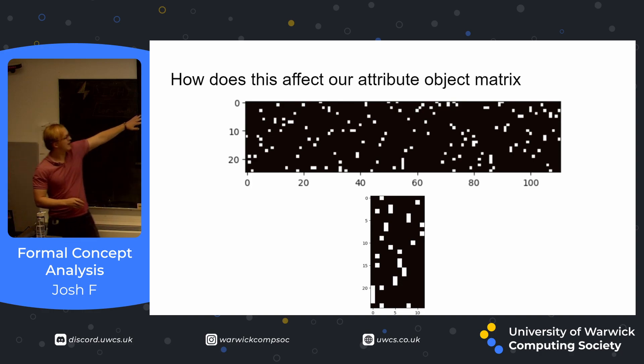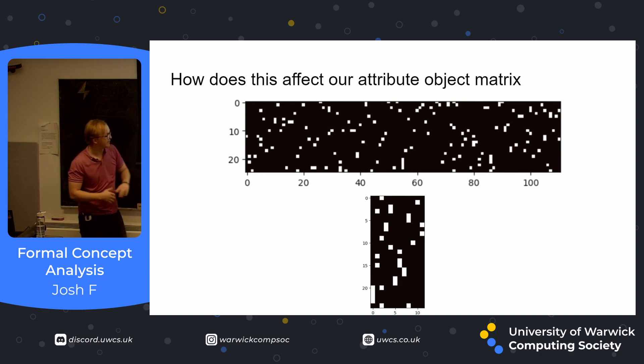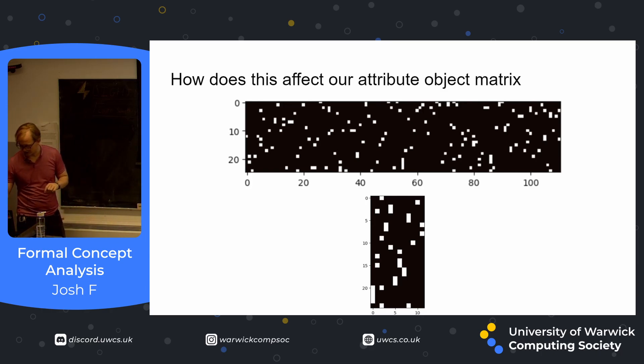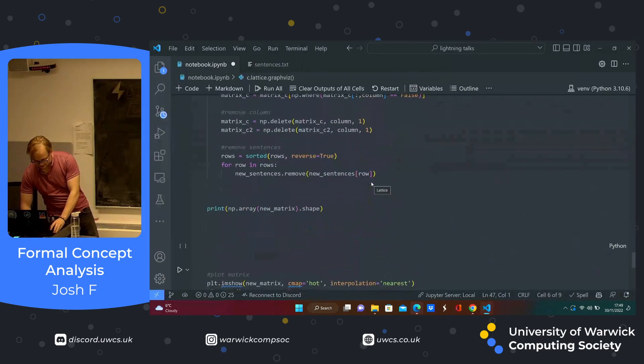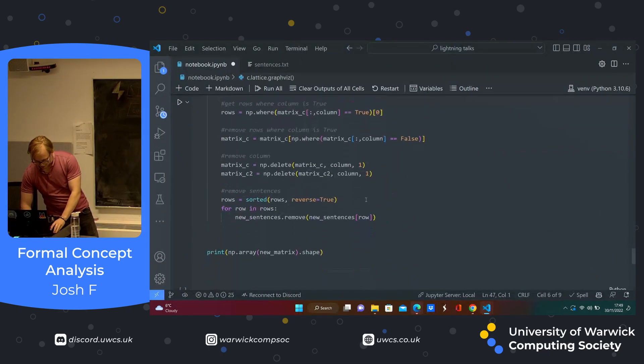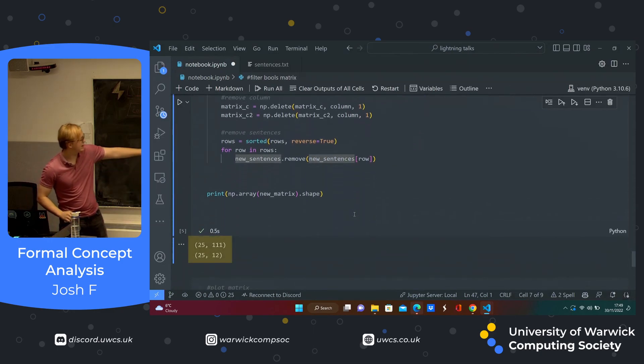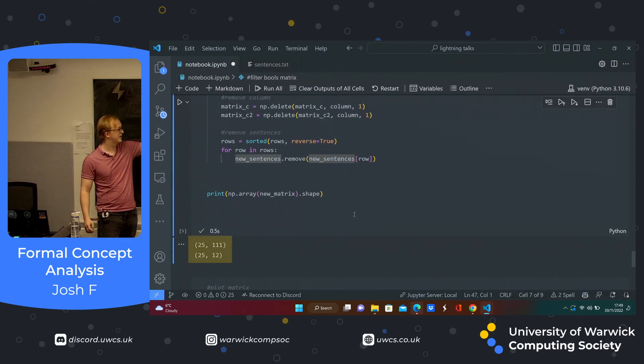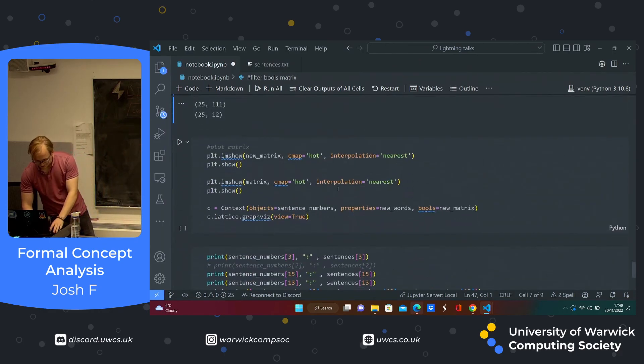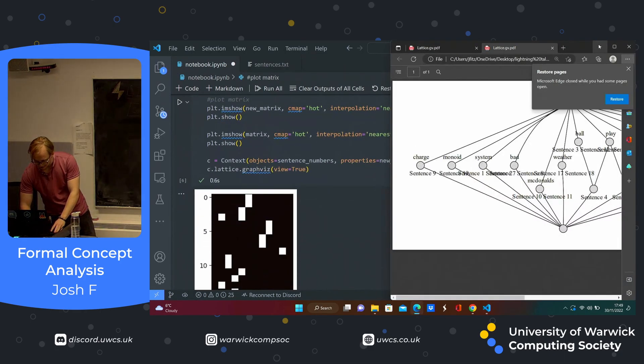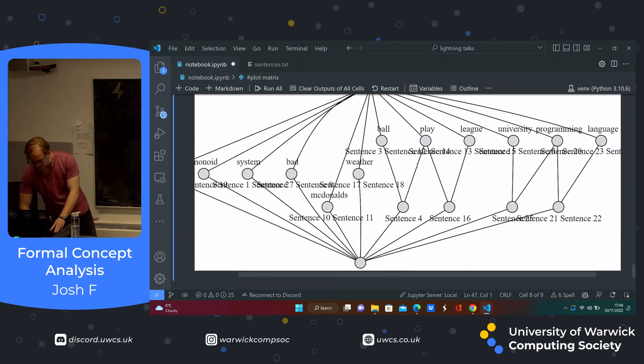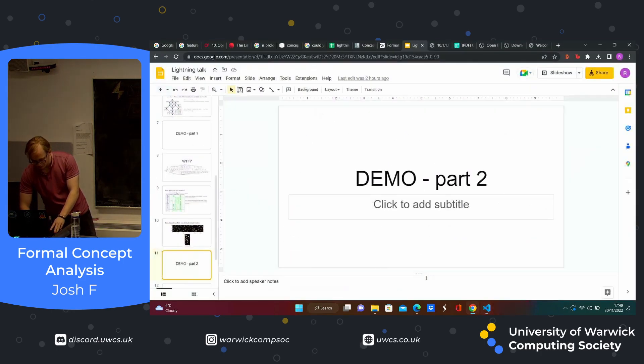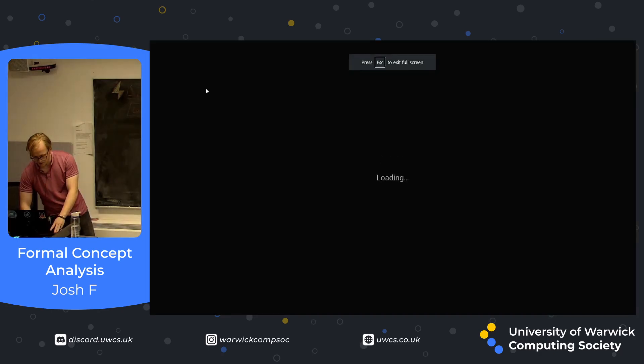So this was our original matrix as you remember. Now it just looks like this. I don't remember the attributes it actually chooses because I just run a Python script which I'll show you guys. It's very ugly. You can look at this at some point. But as you can see originally we had a 25 by 111 matrix. Now we have a 25 by 12, much smaller and easier to work with. Again, pictures of the matrix. And now we get this little concept lattice which is much smaller. And hopefully we can see a bit more information from it.